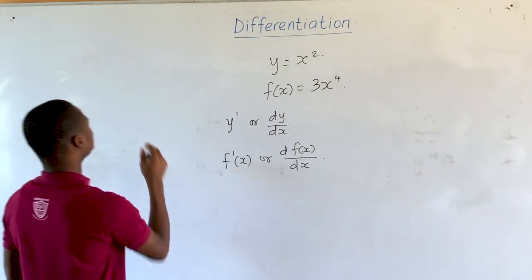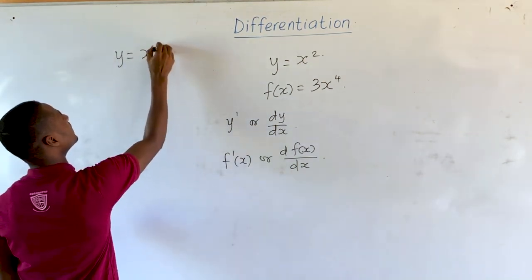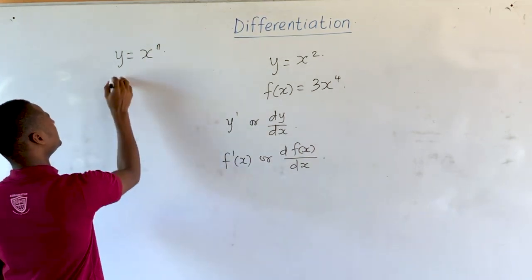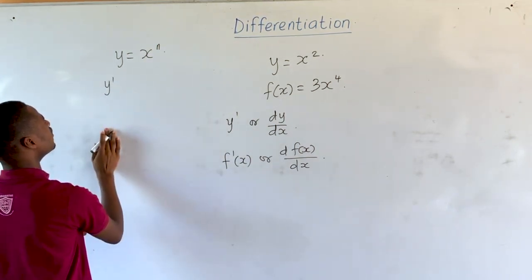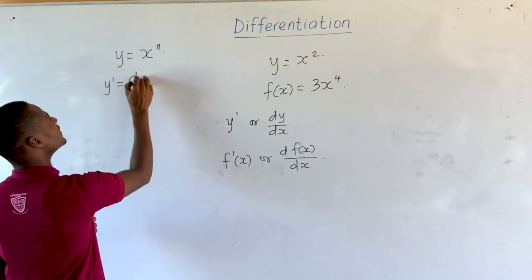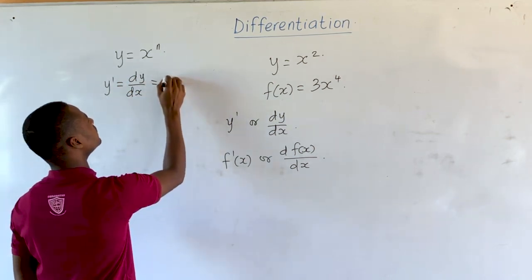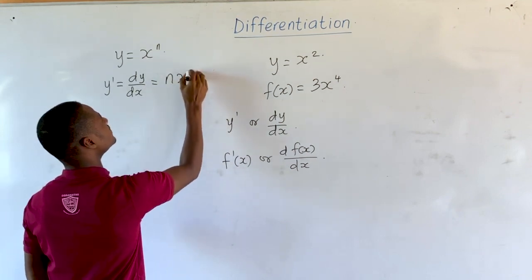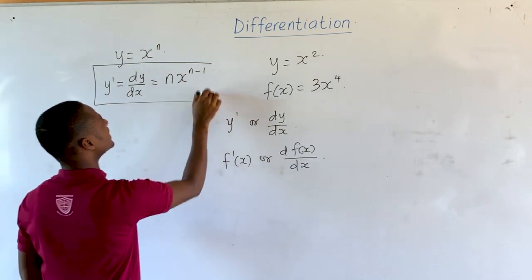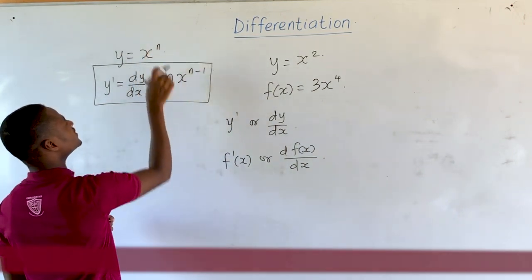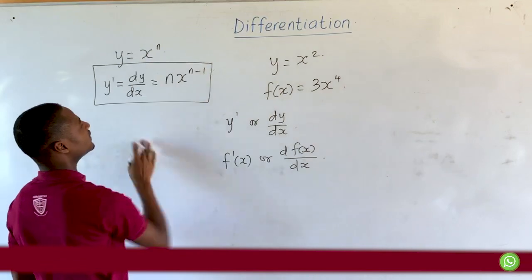Now if we have a general function y is equal to x raised to the power n, then the derivative of this function, which is called y prime and also the same as dy/dx, is equal to n times x raised to the power n minus 1. This simply means that we multiply the function by the power and then subtract 1 from the power.